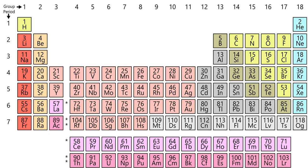Each chemical element has a unique atomic number Z, representing the number of protons in its nucleus. Most elements have differing numbers of neutrons among different atoms, with these variants being referred to as isotopes. For example, carbon has three naturally occurring isotopes: all of its atoms have six protons, most have six neutrons as well, but about one percent have seven neutrons, and a very small fraction have eight neutrons. Isotopes are never separated in the periodic table; they are always grouped together under a single element.